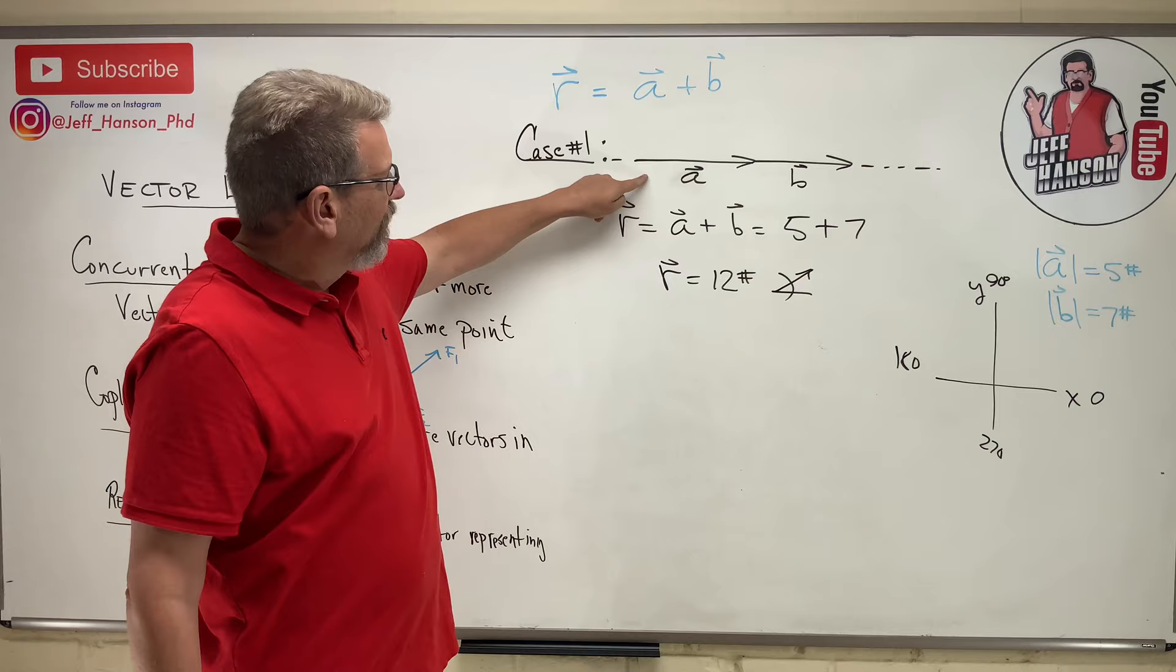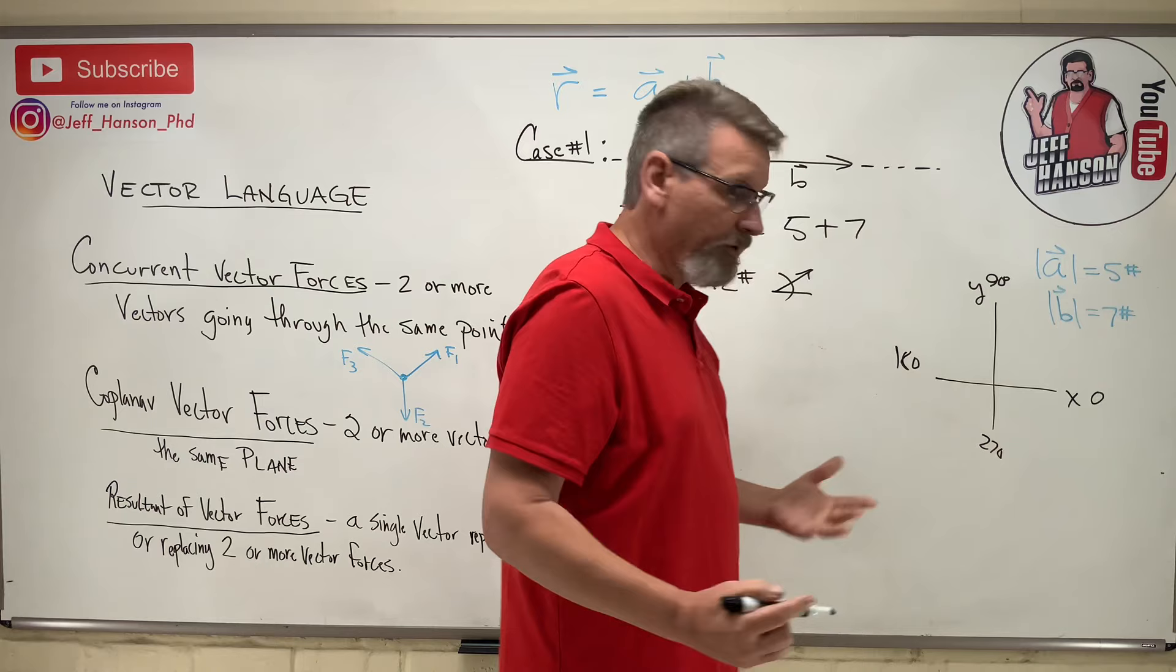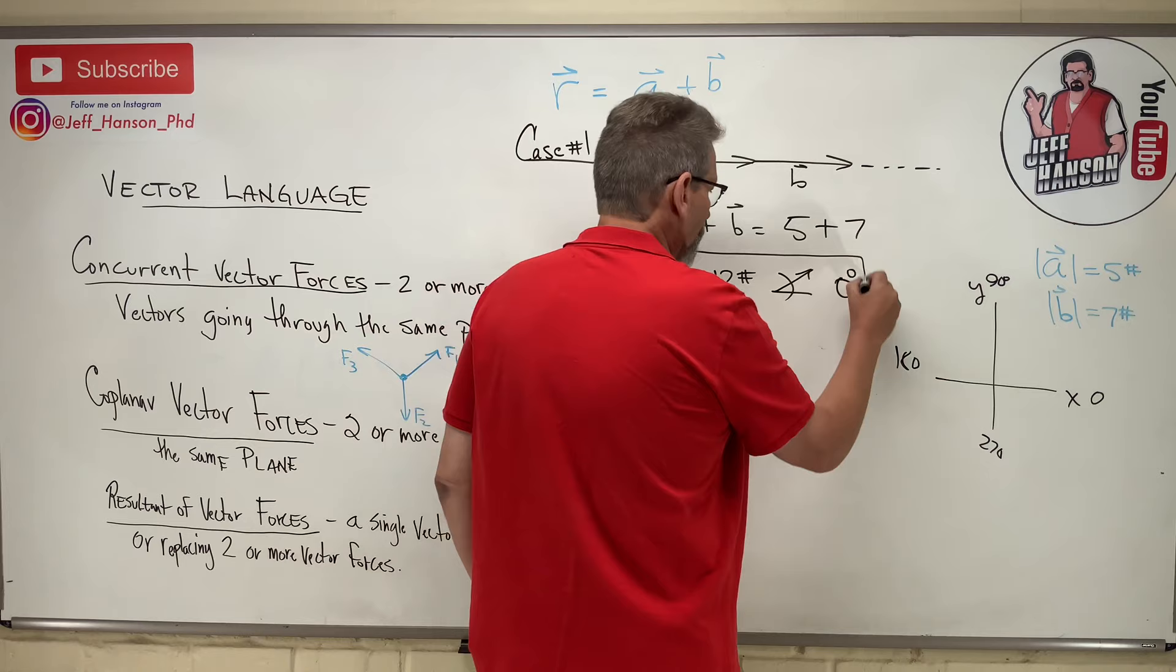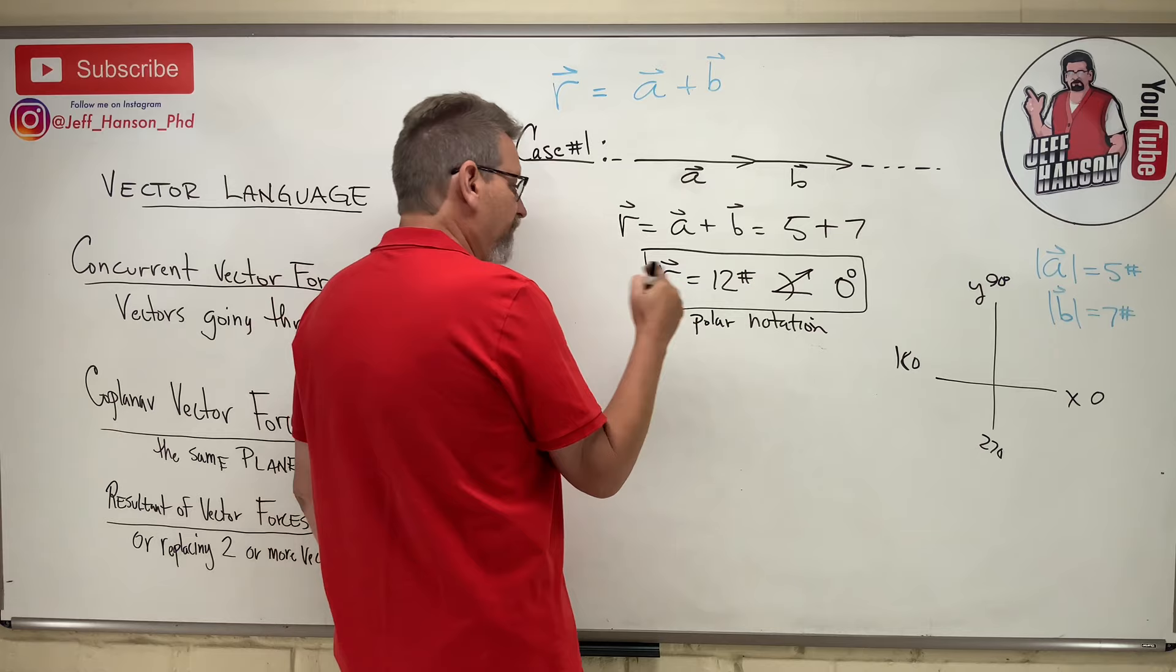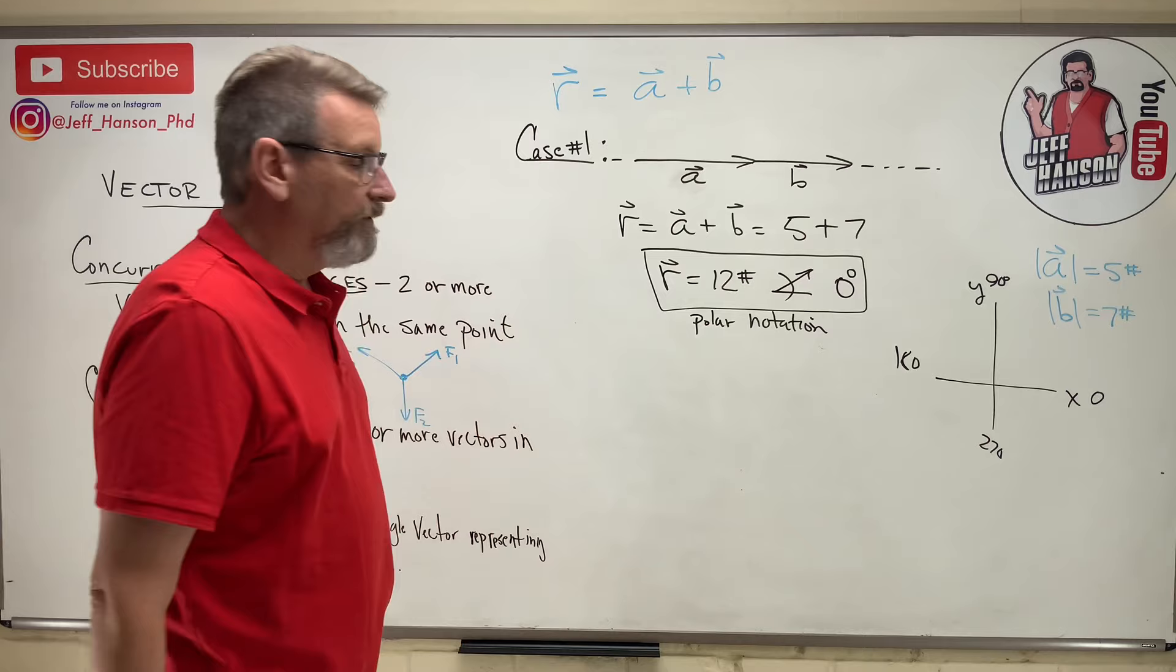So what is the angle here? Well, they're both going in the positive x-direction, which we know is zero degrees. So zero degrees. Now this is the answer for this problem. This is called, it's where the white bears live, polar notation. That's polar notation. That's a vector given with a magnitude and a direction. There's case one. How simple is that? That's too easy, isn't it? Let's talk about case two.